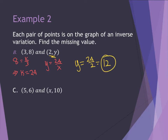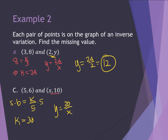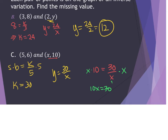For part c, I have 6 equals k divided by 5. Multiplying both sides by 5 gives me k equals 30, or y equals 30 divided by x. Now I'm solving for x, and I know y is 10, so 10 equals 30 divided by x. This is tricky because x is in the denominator. I multiply both sides by x to get 10x equals 30, then divide both sides by 10, and x equals 3.